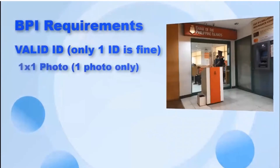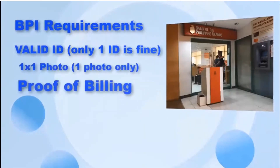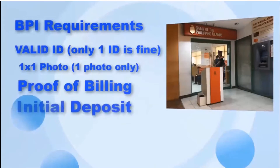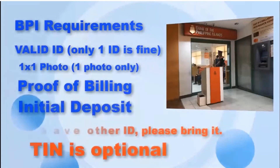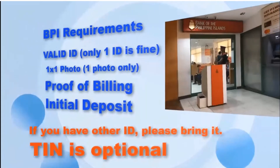Second is a one by one ID picture. Third is proof of billing, which must contain your exact address. And fourth is permission to copy.